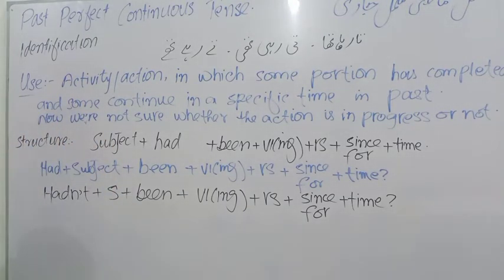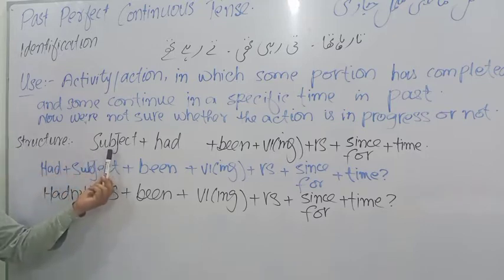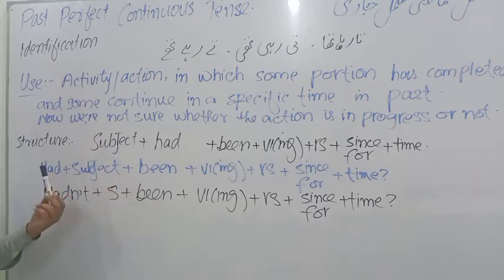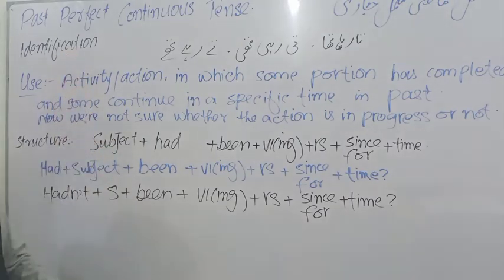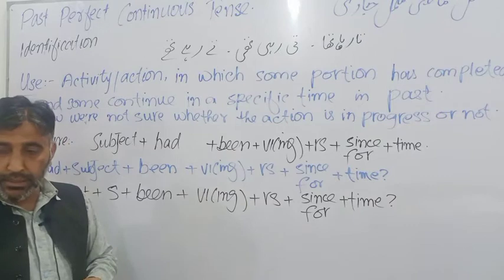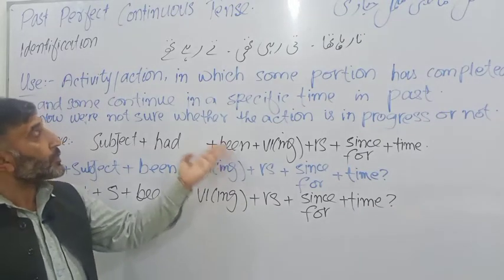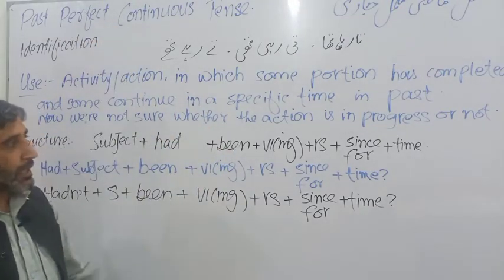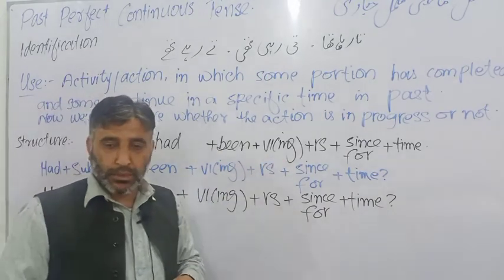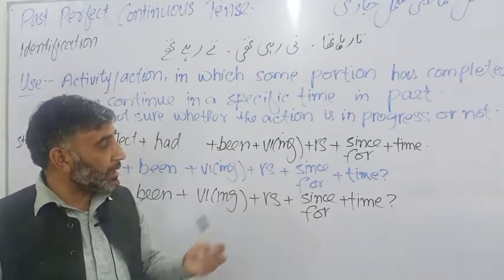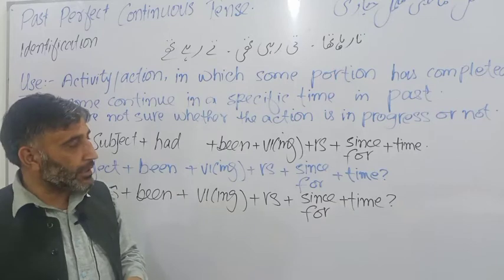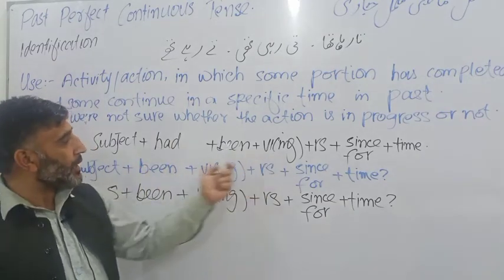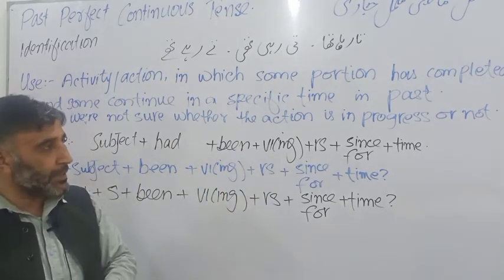So for the structure of this tense, first of all we use subject, then had as auxiliary verb since it's past perfect, and then been, third form for the completed portion, and then present participle, first form plus ing, which shows the continuity of the action in the past.